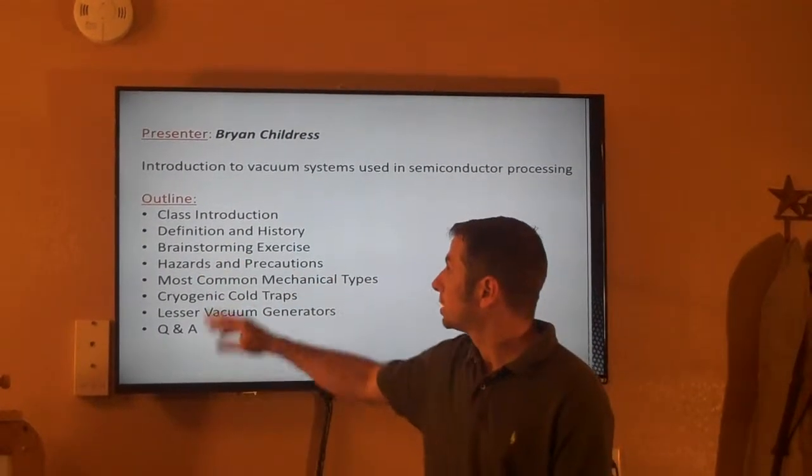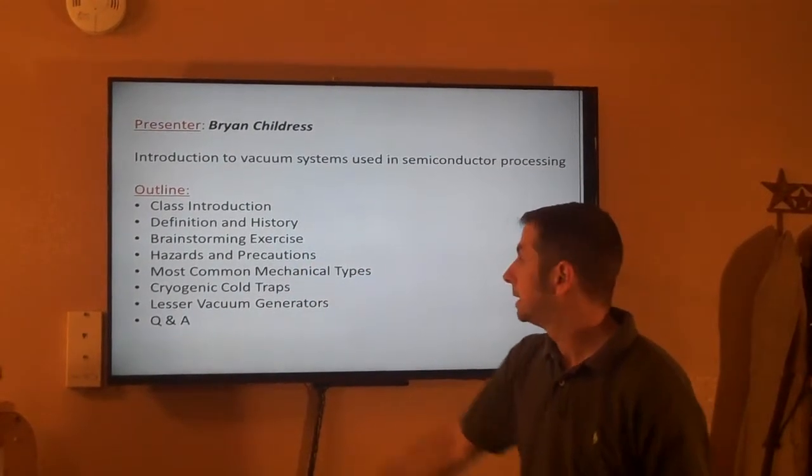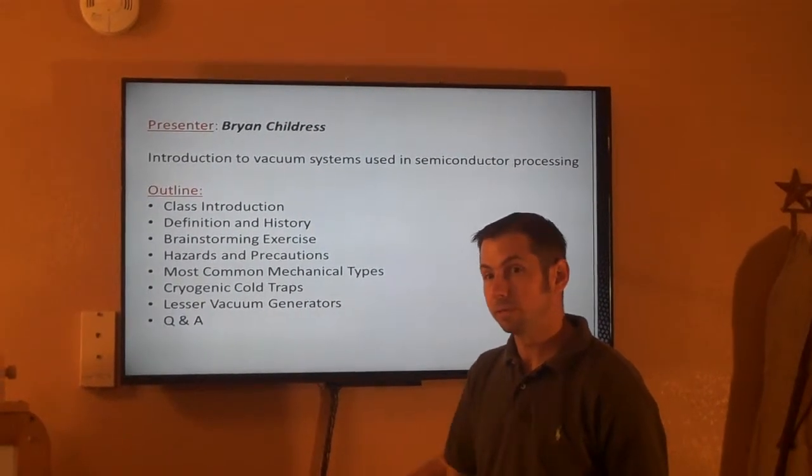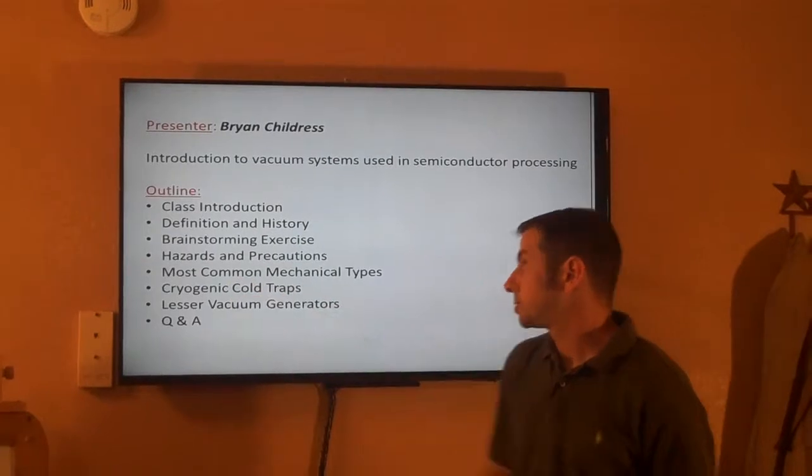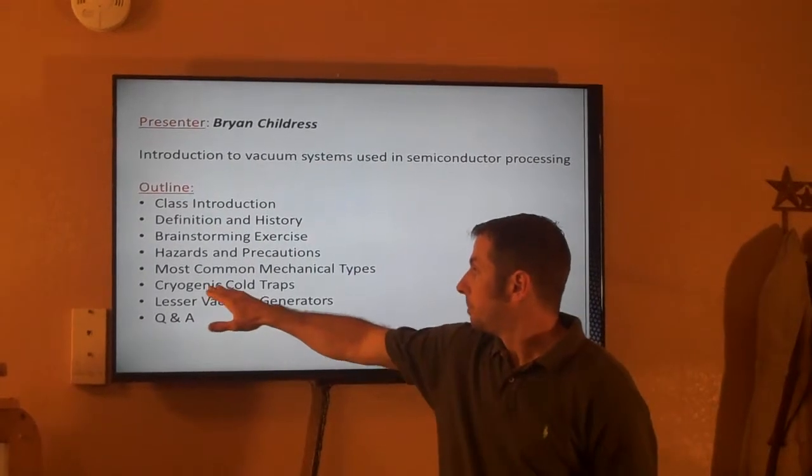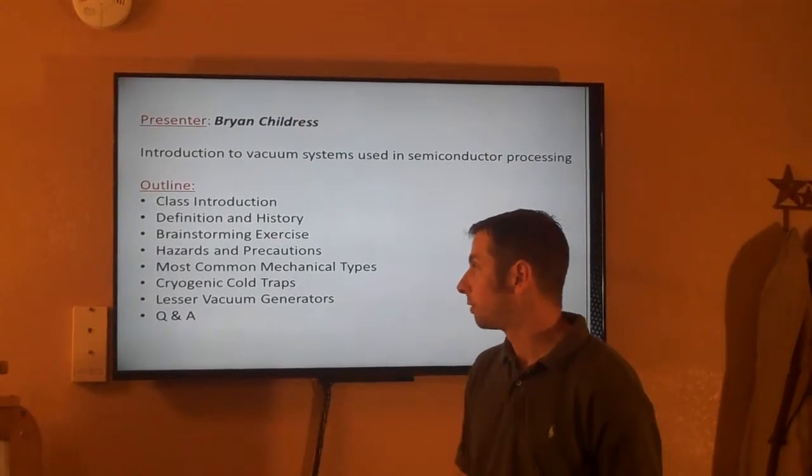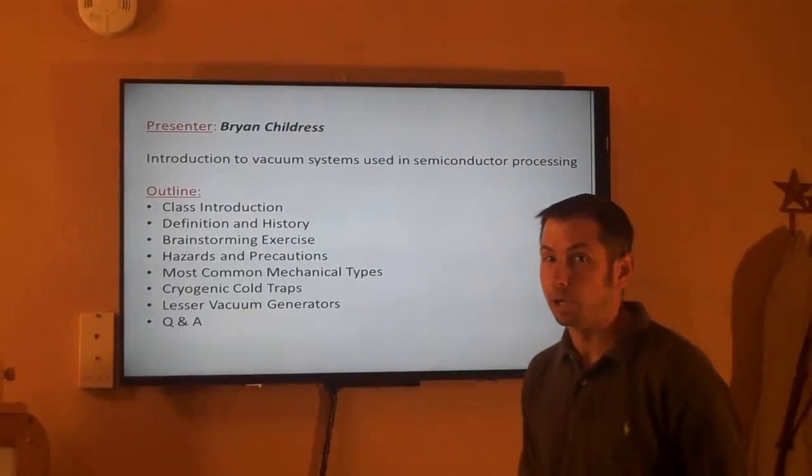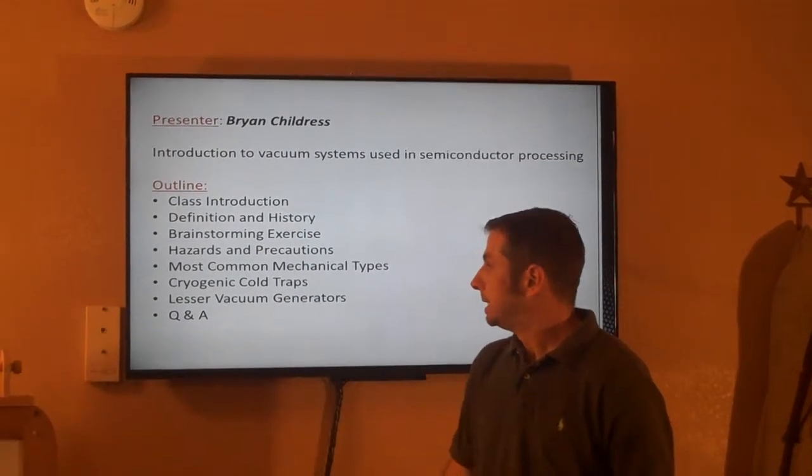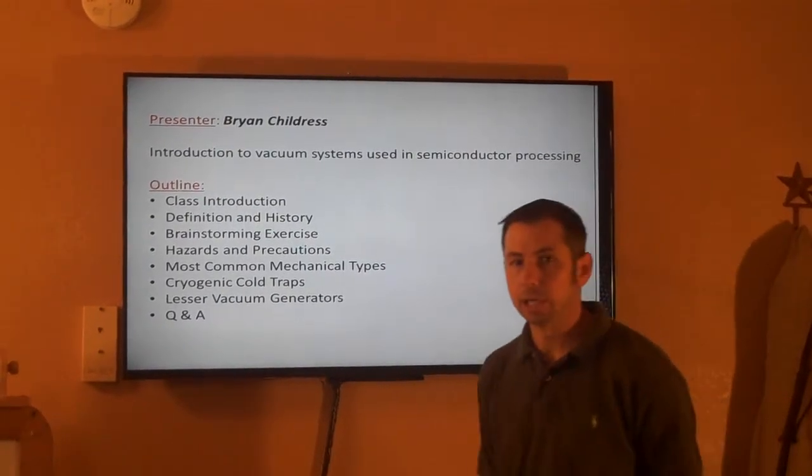So, what we're going to do is have a quick introduction into vacuum systems used in the semiconductor processing industry. We're going to have a definition and history, how it got its roots. We're going to start with a brainstorming exercise, kind of get your thoughts on what you think of when I say vacuum. We're also going to discuss the hazards and precautions that are involved when you're dealing with vacuum systems. Then, we'll get into the most common types of mechanical vacuum pumps. They'll let you get rough vacuum, high vacuum, and ultimately, ultra-high vac, which I'll have to use a cryogenic cold trap to do. And then, we'll kind of go over some of the lesser vacuum generators that are out there, and we'll finish up with a quick Q&A in case you guys have any questions.